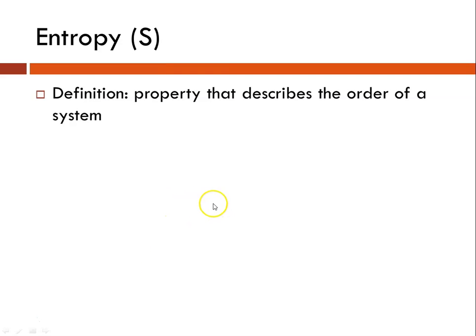Which brings us to a discussion of entropy. What is entropy? The definition is a property that describes the order of a system. So entropy has to do with randomness. Nature tends toward disorder. So the universe and nature tend to prefer randomness.